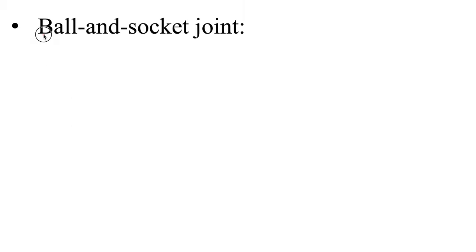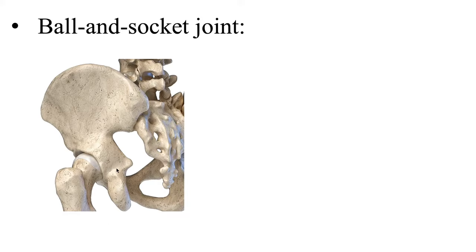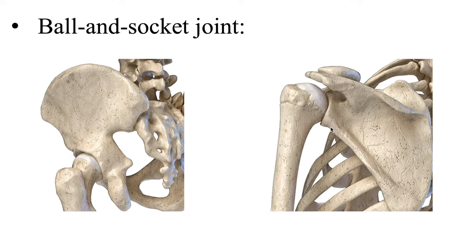The first synovial joint type is the ball and socket joint — a ball-like end of one bone that fits in the cup-like socket of another. For example, we have the hip, the acetabular femoral joint, where the head of the femur is the ball-like bone that fits in the socket known as the acetabulum. Also, we have the shoulder, known as the glenohumeral joint, where the head of the humerus fits inside the socket of the glenoid cavity.